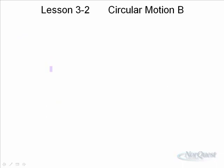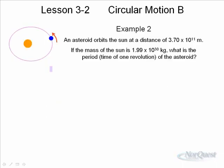One more example: an asteroid orbits the sun at a distance of 3.70 × 10¹¹ meters. If the mass of the sun is 1.99 × 10³⁰ kg, what is the period, or the time of one revolution of the asteroid? Remember, the period of the Earth around the sun is one year, or 365 and a quarter days. What is it for this asteroid? What's causing the asteroid to be in orbit around the sun? Gravity. So gravity is causing the centripetal force.